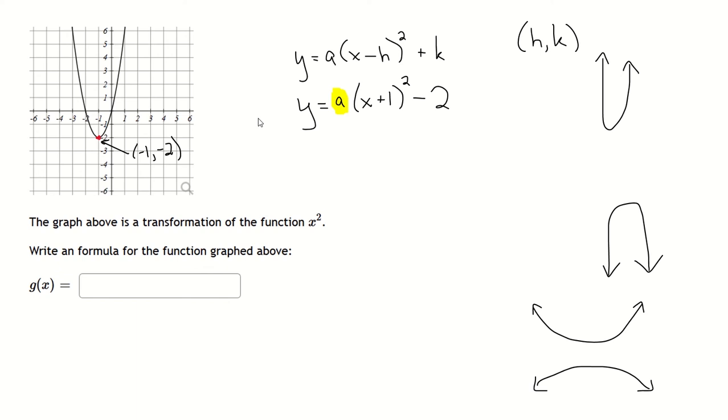So to figure out the a, what I'm going to do is pick another random point on the parabola that's nice. So for example, this would be a nice point, 1, 6, but actually you know what, this looks like an even easier point to use because that point right there is 0, 0, and anytime I can put in zeros, that's good news.